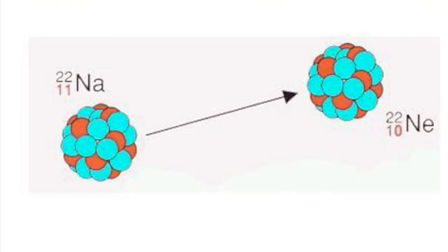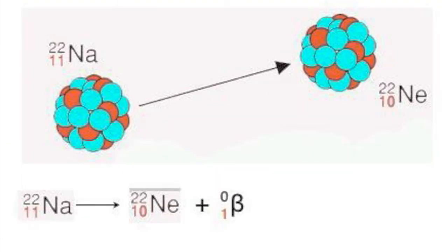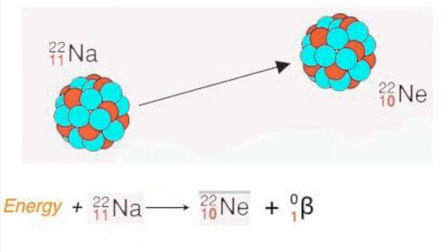An example of positron emission is when sodium-22 changes to neon. In this case, the number of protons is reduced and transforms to a neutron by positron emission. The change from neutron to proton requires a significant amount of energy, which has to be gained from the binding energy of the remainder of the atom.